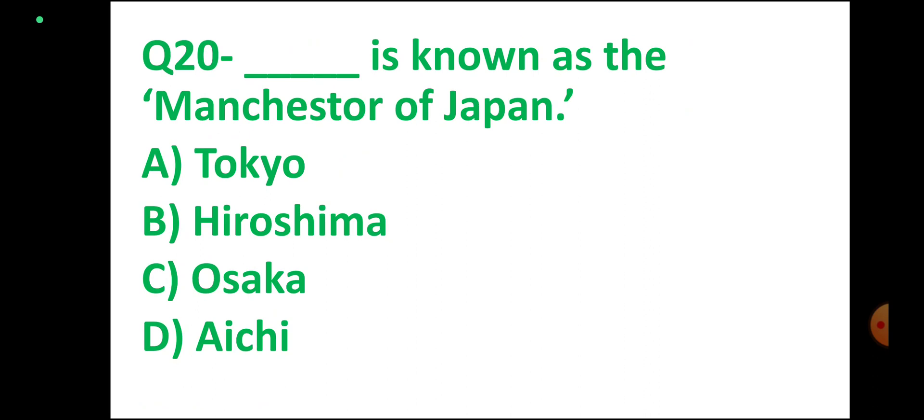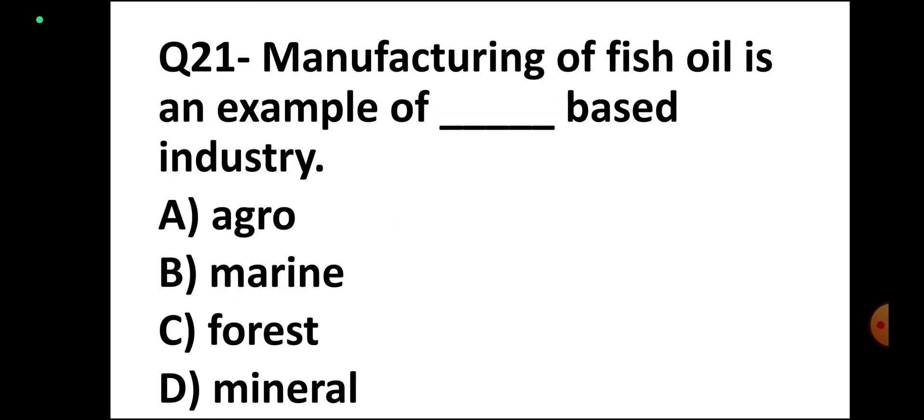Question number 20. DASH is known as the Manchester of Japan. Options: Tokyo, Hiroshima, Osaka, Hachi. Correct answer: Osaka.